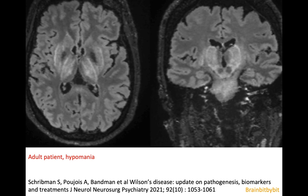The neuropsychiatric symptoms usually present in the third and fourth decades. They are caused because the basal ganglia are involved in movement and mood regulation, and this adult patient presented with hypomania. On the FLAIR image you can see mainly involvement of the outer rim of the putamen, a sign classic for Wilson's disease, and again you can see the sparing of the red nucleus.